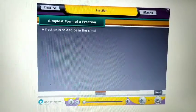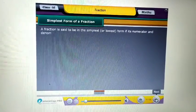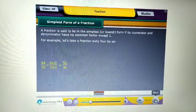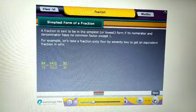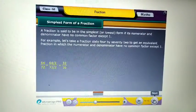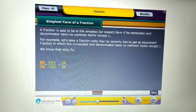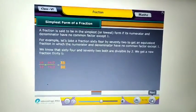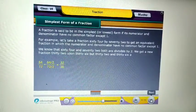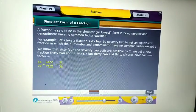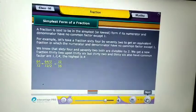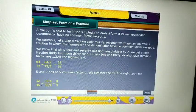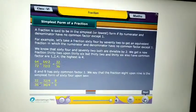Fraction is said to be in the simplest or lowest form if its numerator and denominator have no common factor except one. For example, let us take a fraction 64 by 72 to get an equivalent fraction in which the numerator and denominator have no common factor except one. Now, we know that 64 and 72 both are divisible by two. We get a new fraction 32 upon 36 but 32 and 36 also have common factors of one, two, four. The highest is four. Eight and nine has only common factor one. We say that the fraction eight upon nine is the simplest form of 64 upon 72.